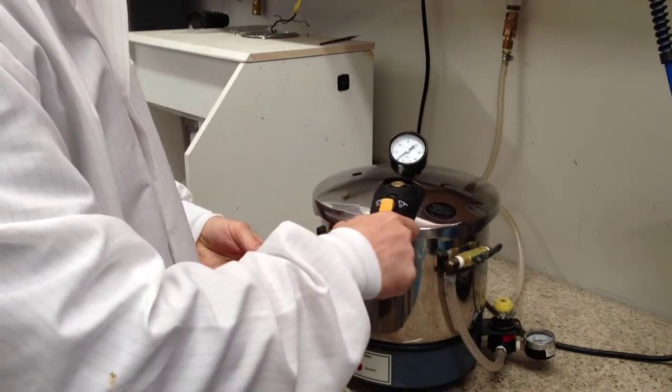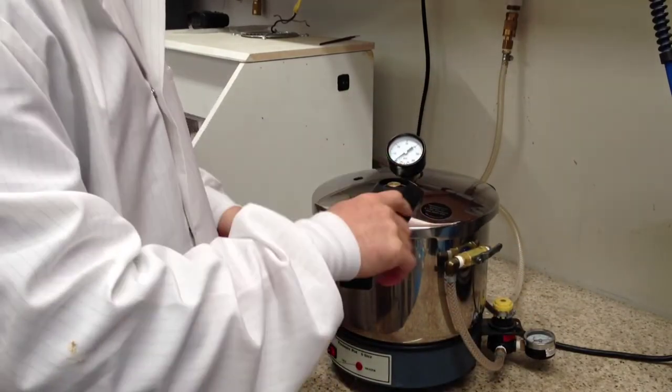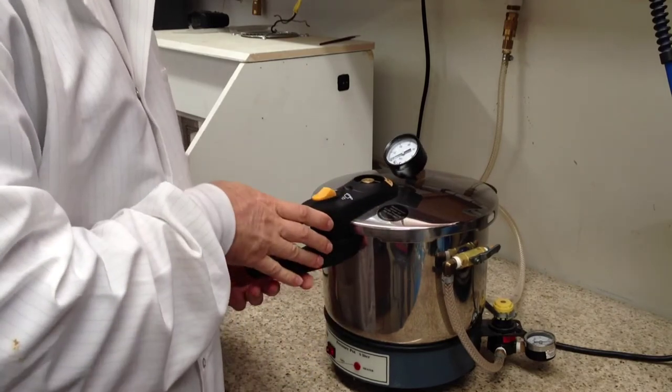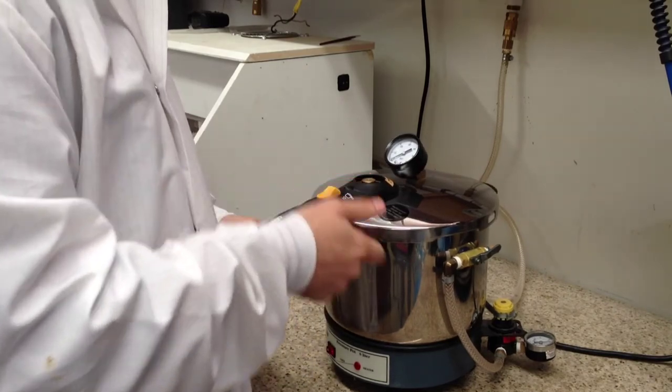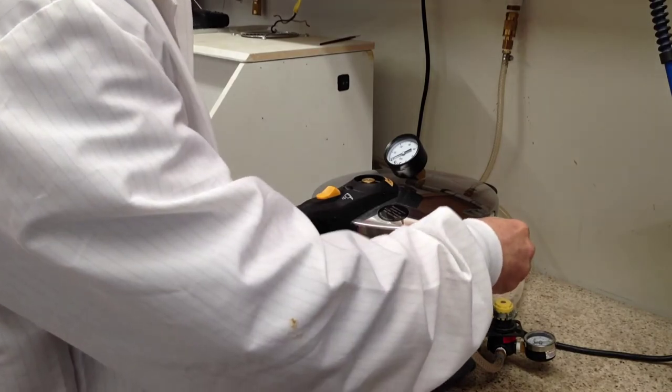You are going to close the lid, lining up the hash marks to get the proper seal. You will close it, flip the lock forward, and then apply the air.